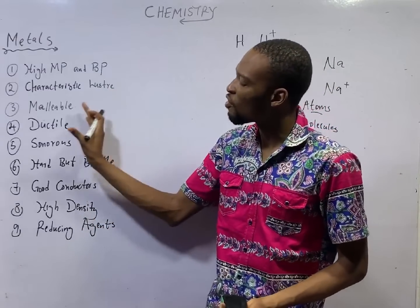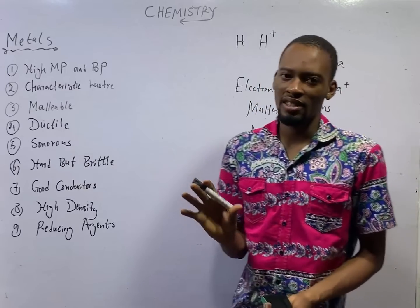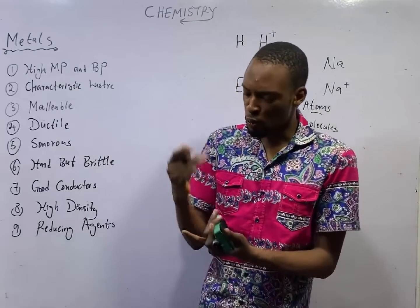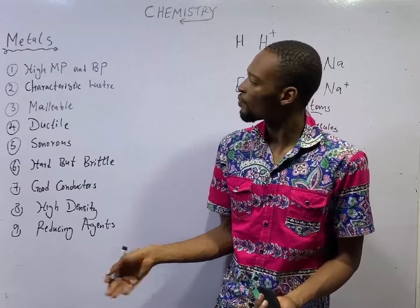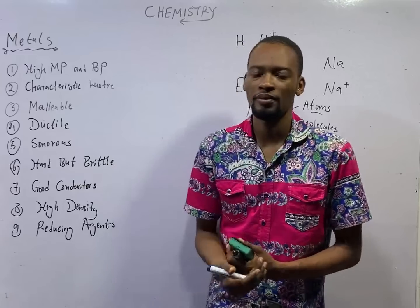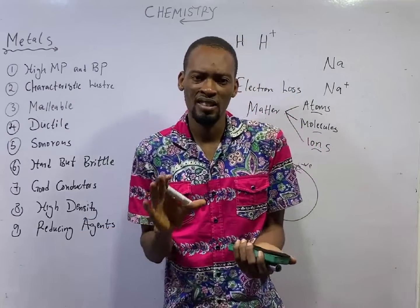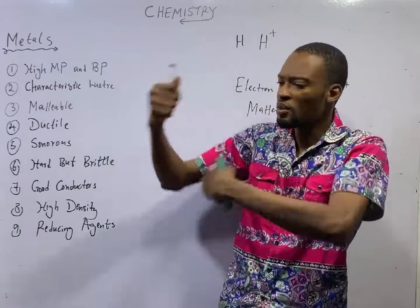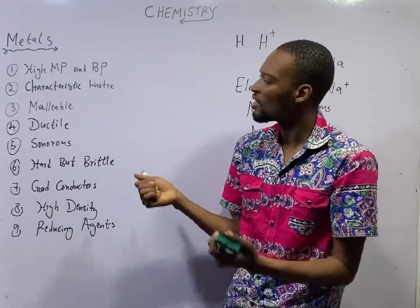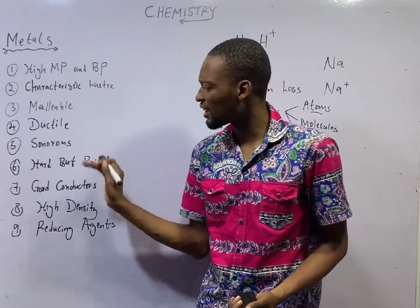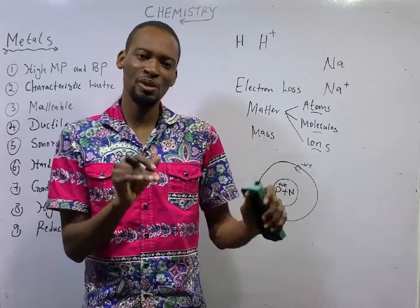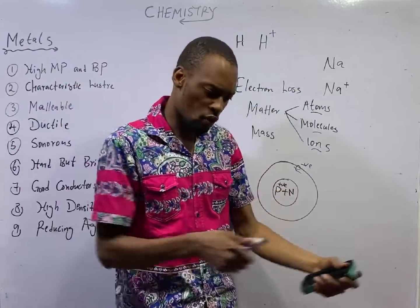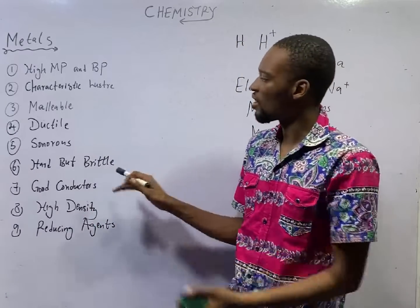That takes us to the characteristics of metals. The first characteristic is high boiling and melting point — it must burn or melt at a high temperature. Metals must have characteristic luster, meaning shiny appearance. Metals must be malleable — you can beat them into a sheet, like aluminum roofing sheet, you can fold it; copper wire, you can bend it. Metals are ductile — ductility means the ability of metals to be drawn into wire, like copper wire and aluminum wire used for electricity.